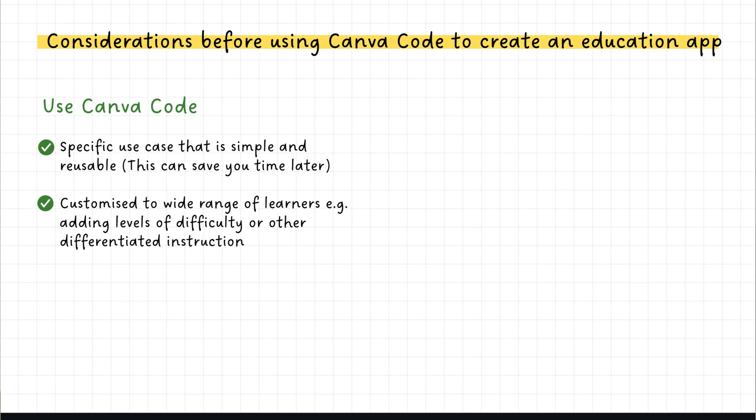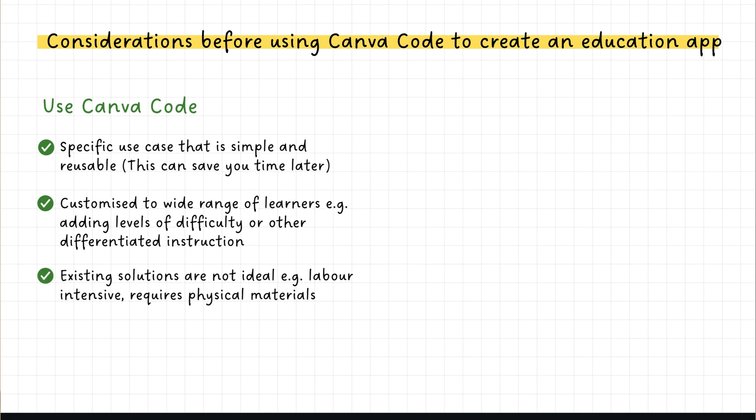This could be adding levels of difficulty or differentiated instructions to cater for your students. Next, your existing solutions might not be ideal — for example, they could be labour intensive or require physical materials unnecessarily. Games or simulations specific to your teaching concepts are great because they might not be readily available or easily accessible for your students.